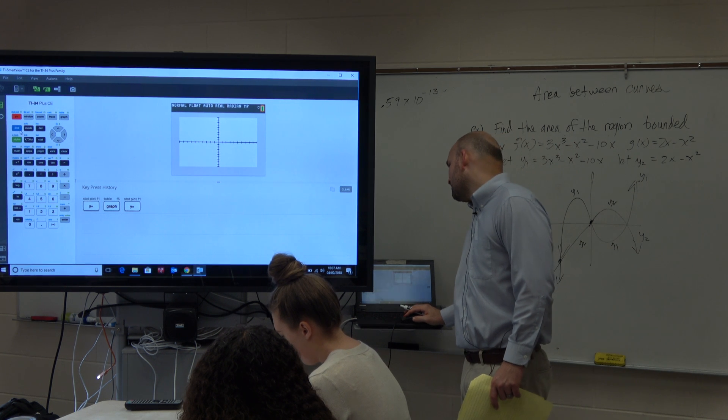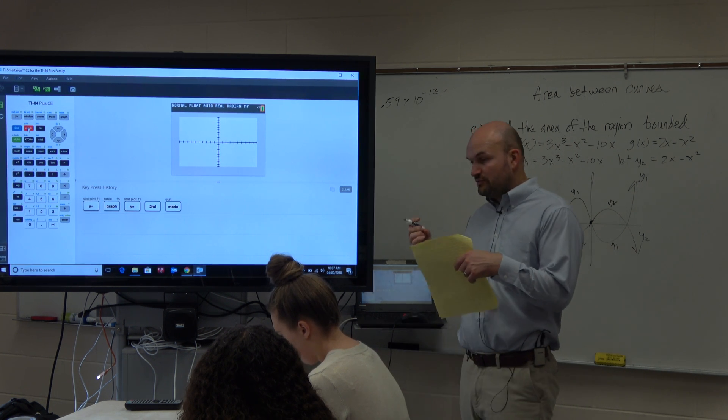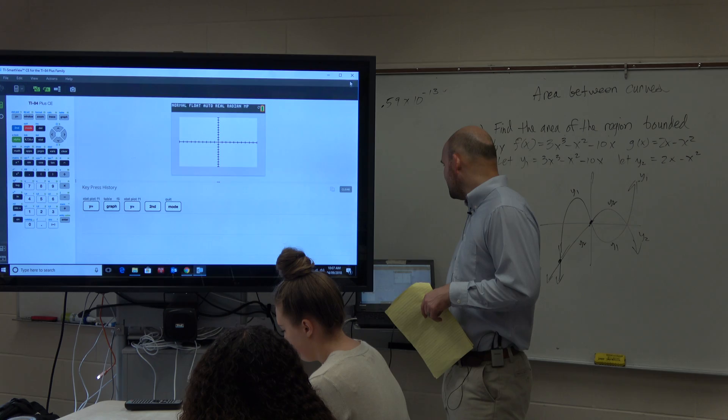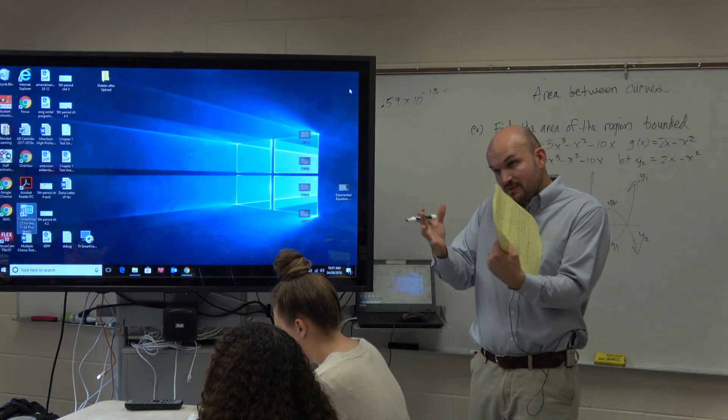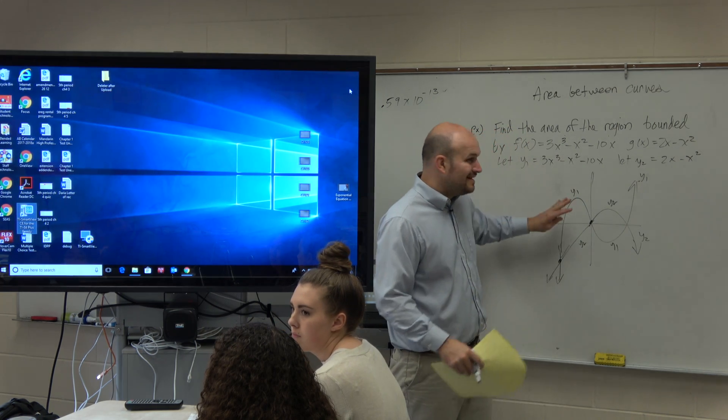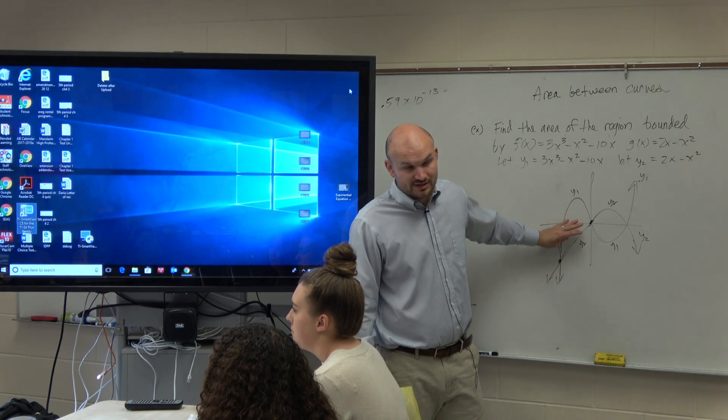So the reason why this is important for this problem is we've got to make sure we zoom out as far as our graph to make sure we get the whole scope of what the graph looks like. And then once we have the whole scope of what the graph looks like, then we can write the integral of what it's going to be.